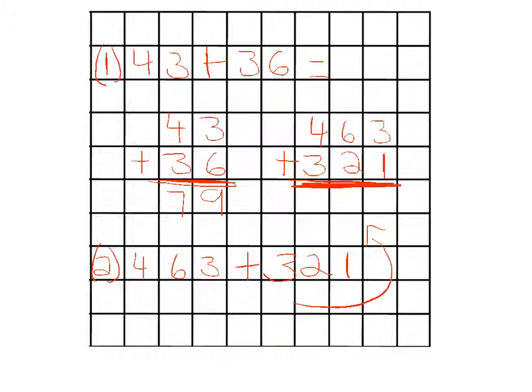Line here. And then I simply go 3 plus 1 is 4. 6 plus 2 is 8. 4 plus 3 is 7. So the answer is 784. Easy. Those type of questions are nice and easy.